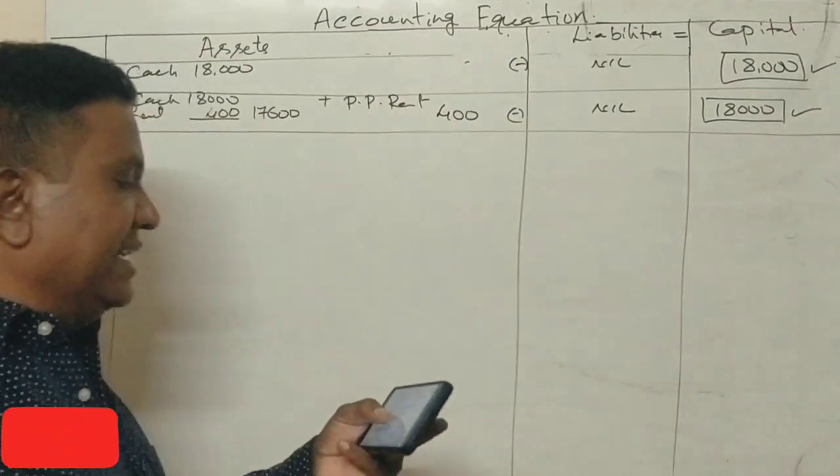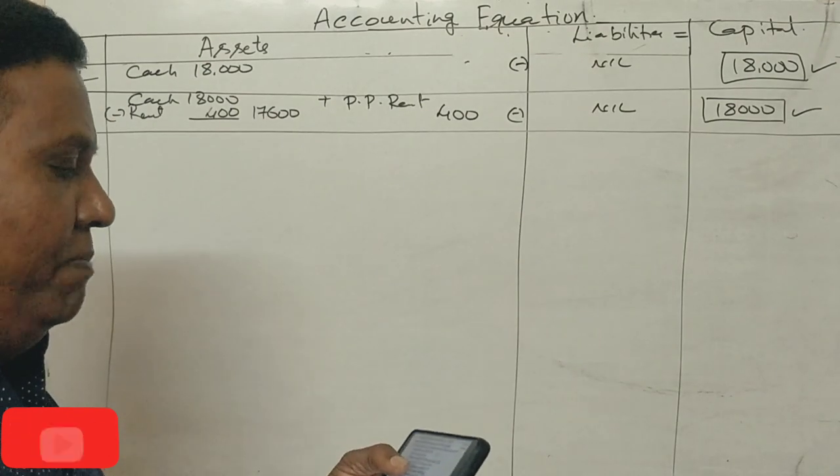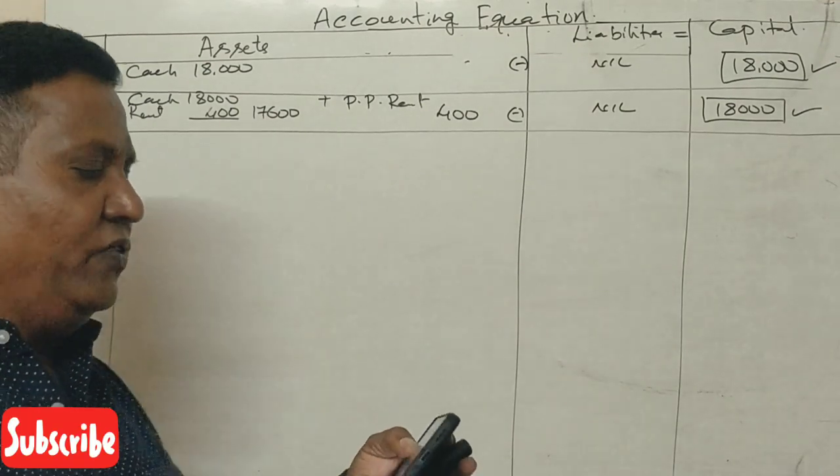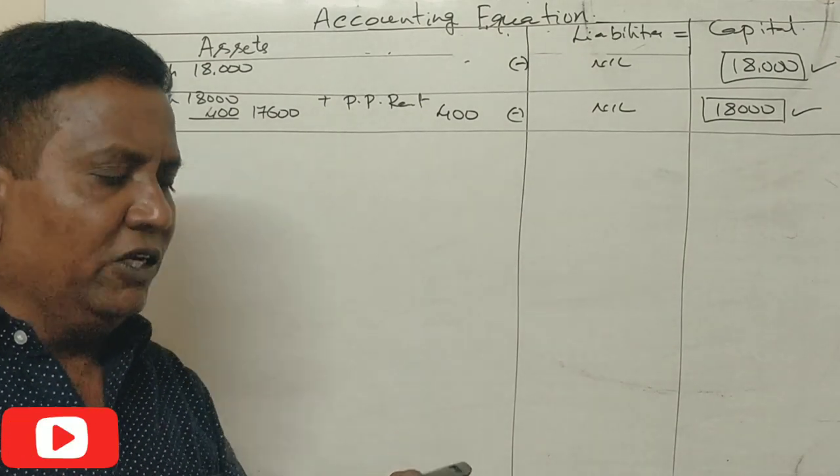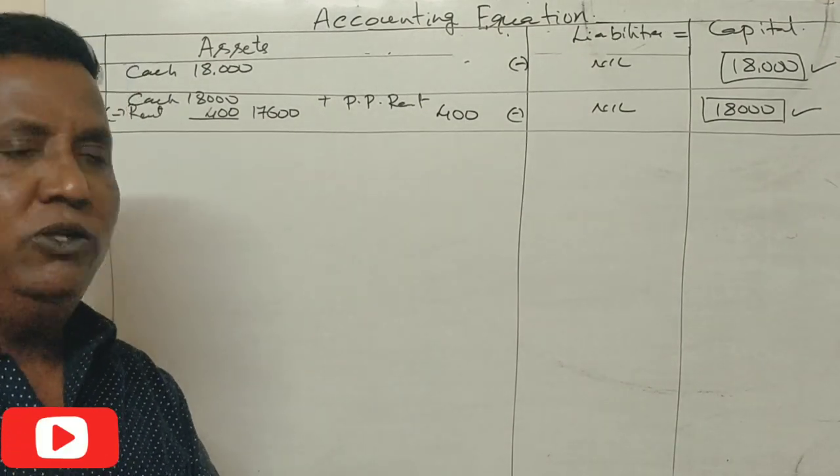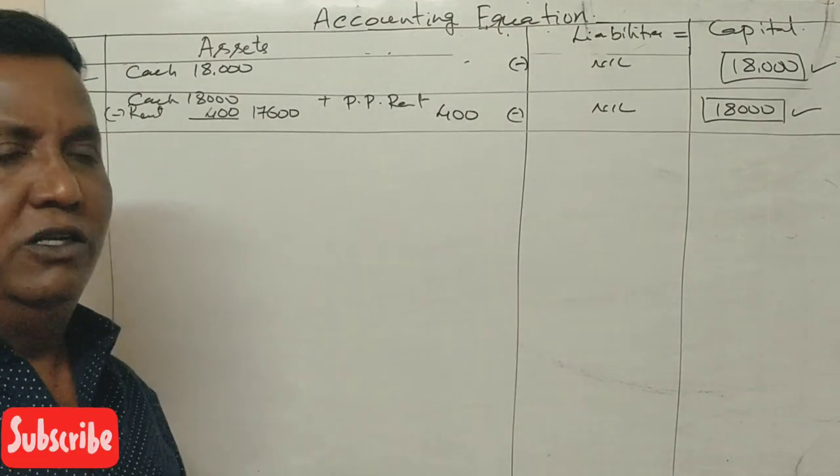Third transaction: purchase goods for cash ₹5,000 and on credit ₹2,000.